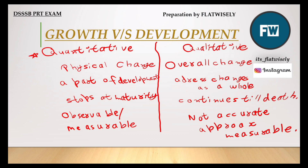To summarize the differences: Growth is quantitative; development is qualitative. Growth is physical change; development is overall change. Growth is part of development; development addresses changes as a whole. Growth stops at a certain age; development continues throughout life. Growth is observable and measurable with accurate data, whereas development provides only approximate measurable data.